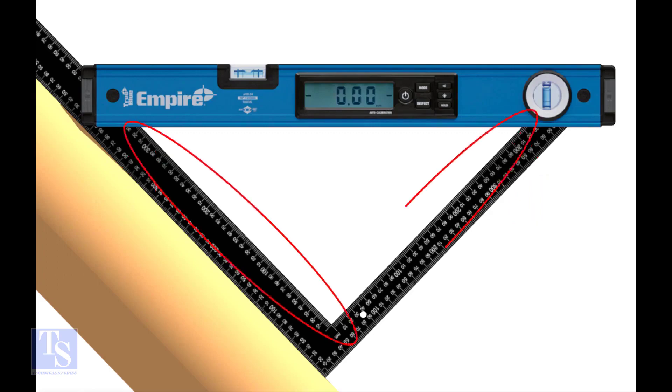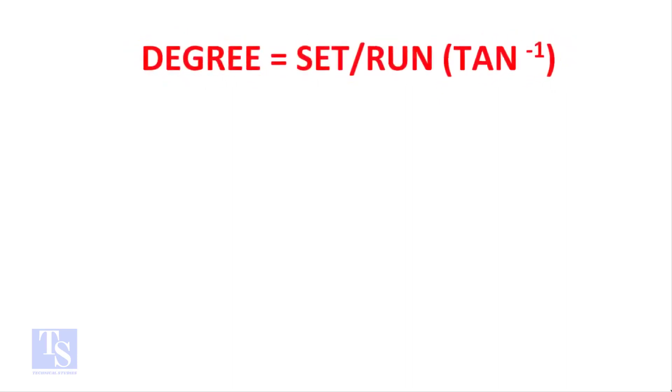Now we have the set and the run of the pipe. Let us apply the tan theta rule. Degree equals set divided by run, then inverse tangent.